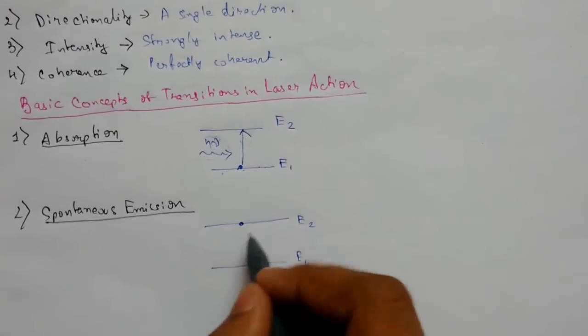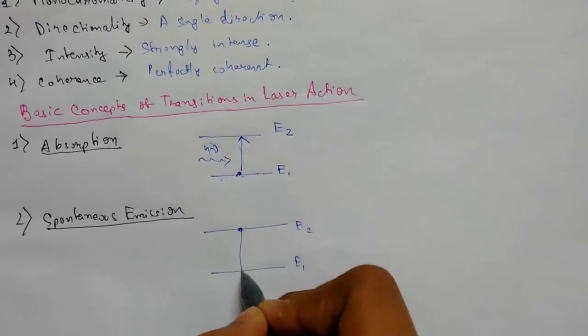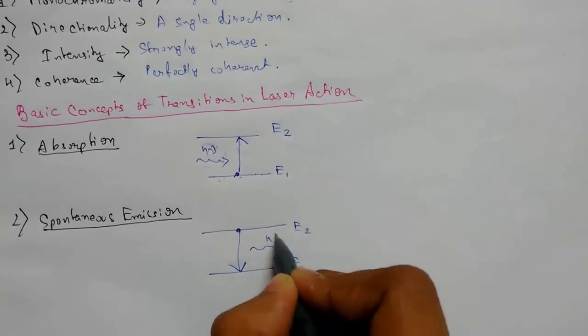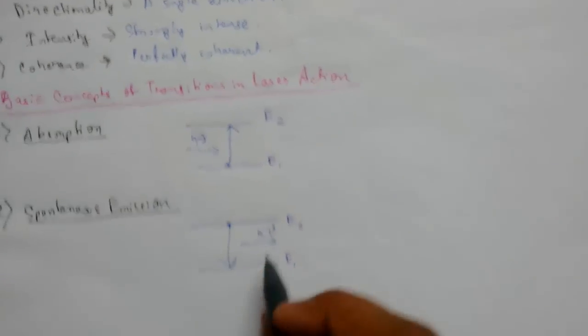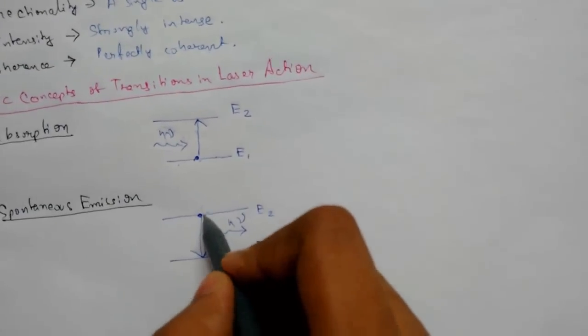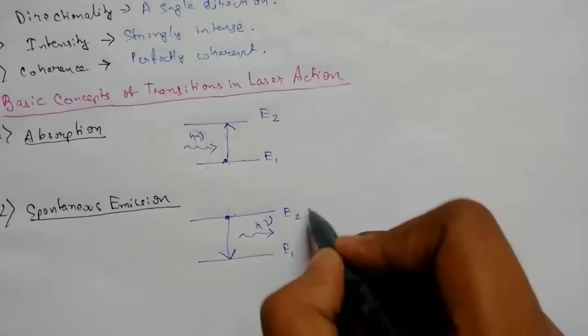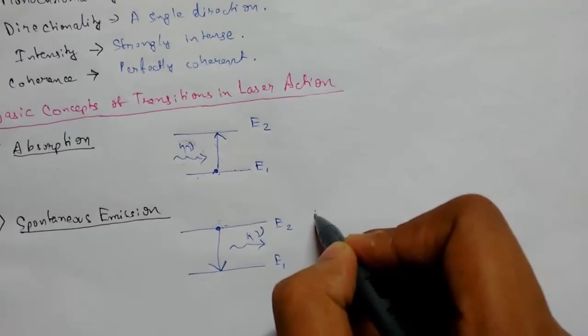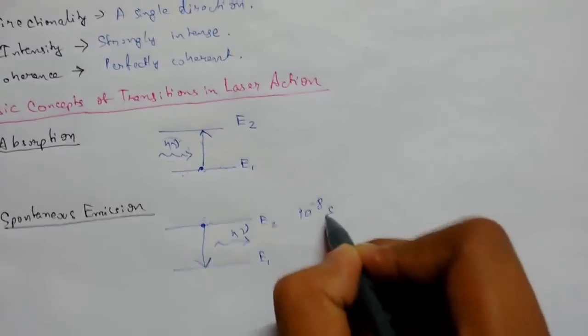When an atom is in an excited state, that is the higher E2 state, we need to remember that the lifetime of an atom in that state is 10 to the power minus 8 seconds. It jumps to the lower energy level as the lifetime is finished.